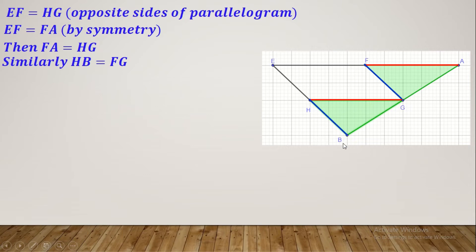If we want to use side-side-side, can we say anything about BG and GA? There's nothing to analyze about them, so we should use the angles. We need to find the angles included between the two sides. One method: angle F equals angle H as opposite angles of the parallelogram.